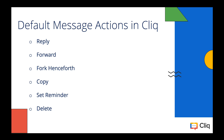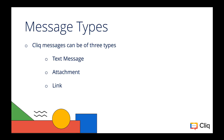The default message actions that we have are reply, forward, fork, copy, set reminder, and delete. These message actions are applicable on the different types of messages as well. There are three different types of messages: one is a message of the type text, or it can be an attachment, or it can be a link.